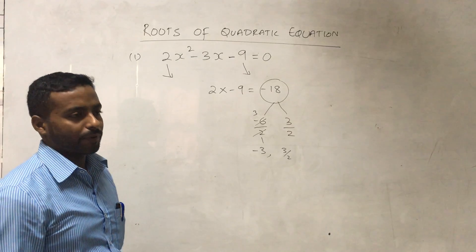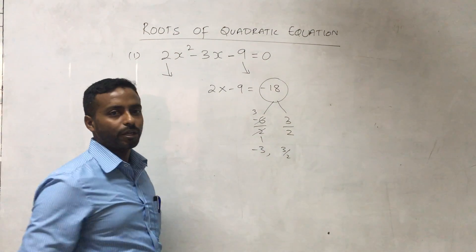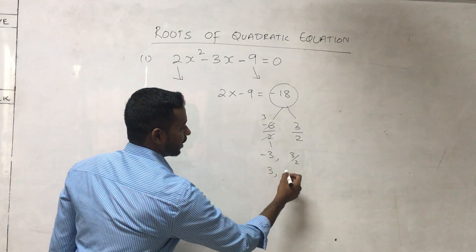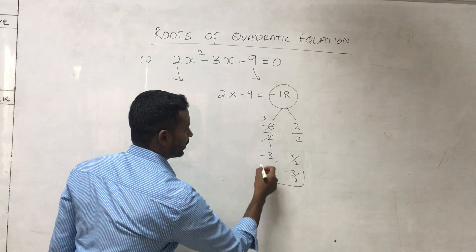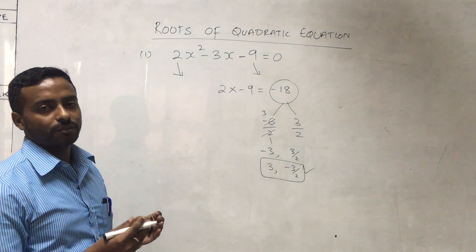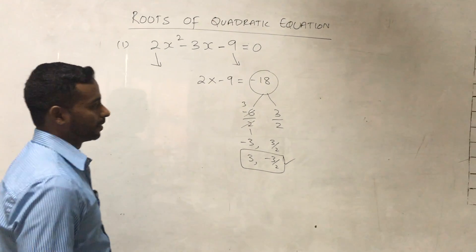The last step is to multiply these two values with negative sign, that is 3 and -3/2. This is the answer for finding the roots by the factorization method.